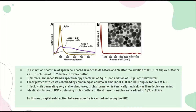The triplex construct was obtained by combining an equimolar amount of TFO and D1-D2 duplex for 24 hours at 4°C. While generating very stable structures, triplex formation is kinetically much slower than duplex annealing. Identical volumes of DNA-containing triplex buffers of the different samples were added to AgSp colloids. Representative transmission electron microscopy images of the AgSp colloids upon addition of either triplex buffer or D1-D2 in triplex buffer provide complementary qualitative evidence of the different degree of aggregation undergone by the nanoparticles.